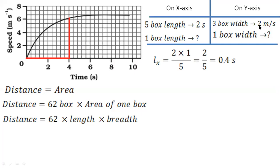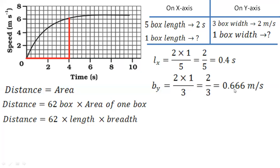In the same way we calculate breadth from the y-axis. By = 2 × 1 divided by 3. So 2/3 = 0.666 meter per second. I am writing Lx and By so students understand which axis each value came from, but you can just write L and B. Have you understood how we are calculating these box values — length as well as breadth?